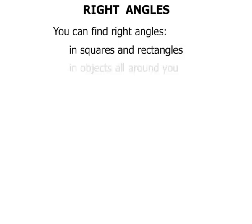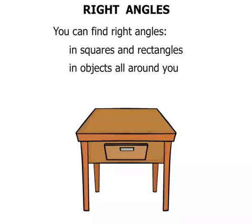You can also find right angles in objects all around you. So we consider this table. We can see that yes, the leg and the top of the table would be at right angles. There's a right angle there.